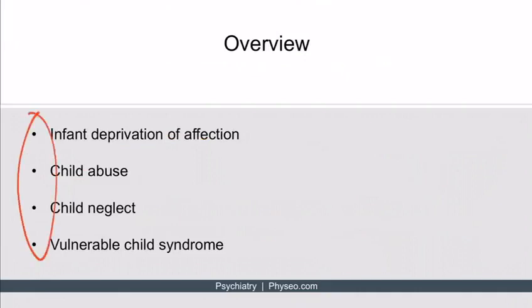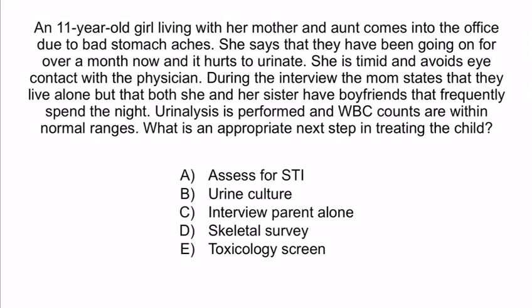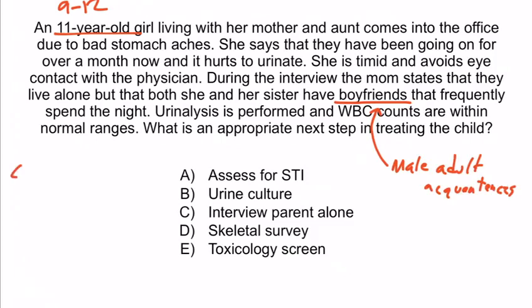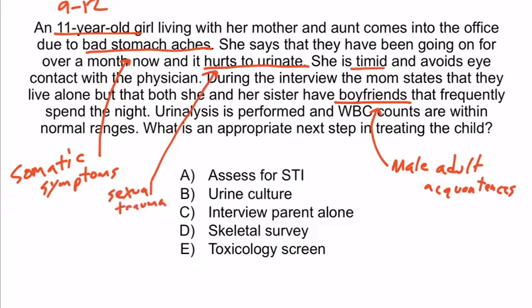Now that we've covered all four conditions, let's review with a question. An 11-year-old girl living with her mother and aunt comes into the office due to bad stomach aches for over a month, and it hurts to urinate. She is timid and avoids eye contact. The mom states they live alone, but both she and her sister have boyfriends that frequently spend the night. Urinalysis shows white blood cell counts within normal ranges. What is an appropriate next step? From the question stem, this young girl is at risk of sexual abuse: she's 11 years old in that 9-to-12-year-old range, there are male adult acquaintances, somatic symptoms are present, pain on urination is a red flag for sexual trauma, and she is timid and avoids eye contact.